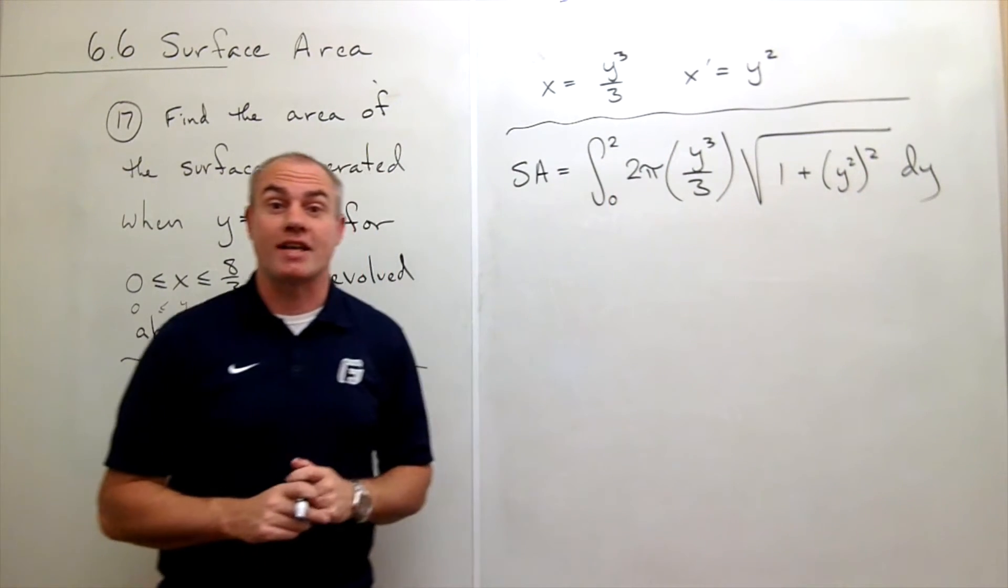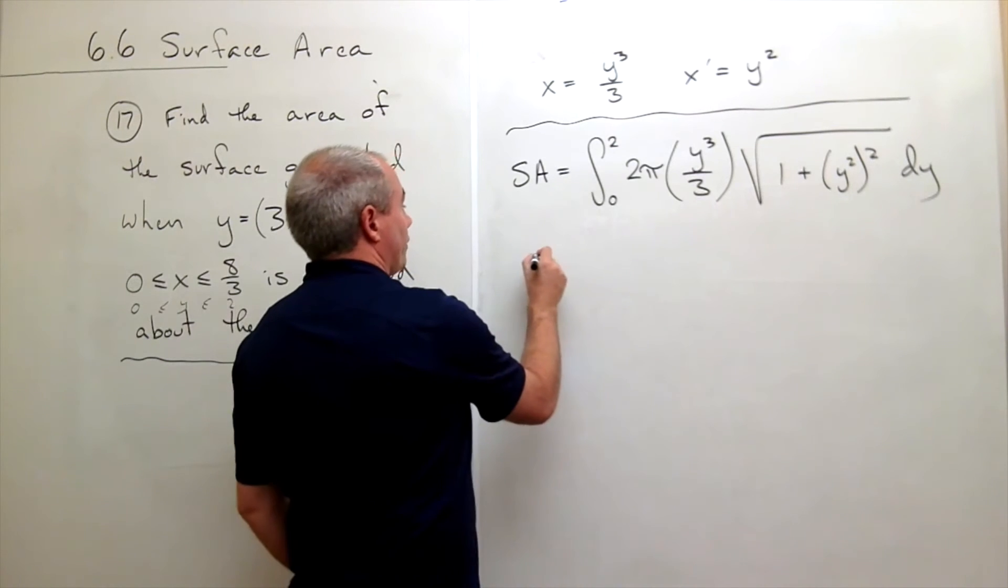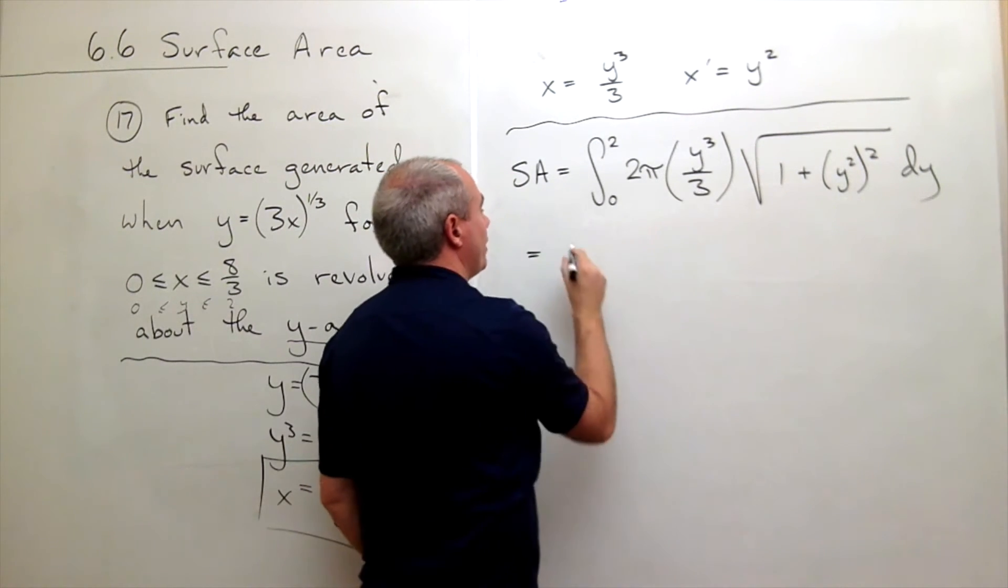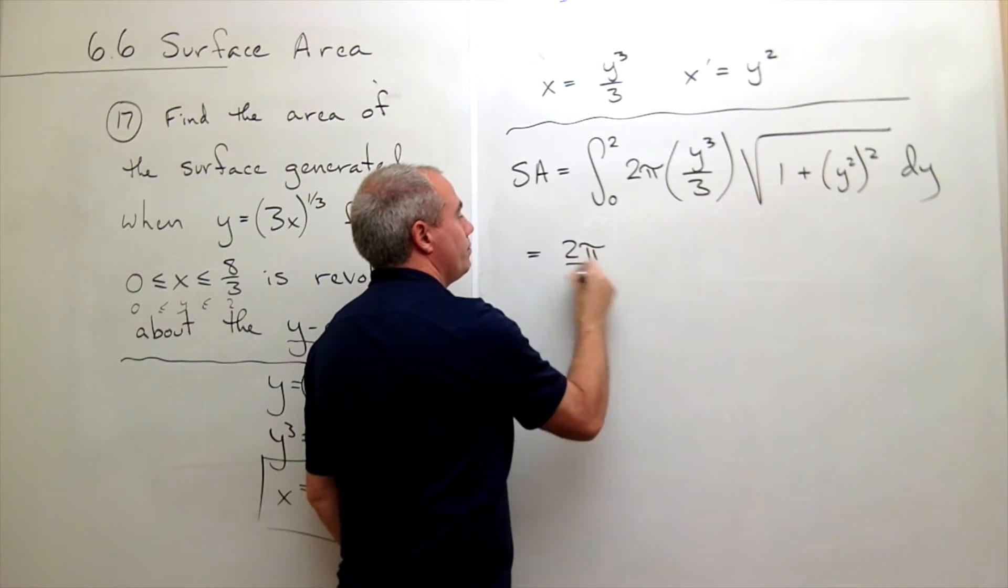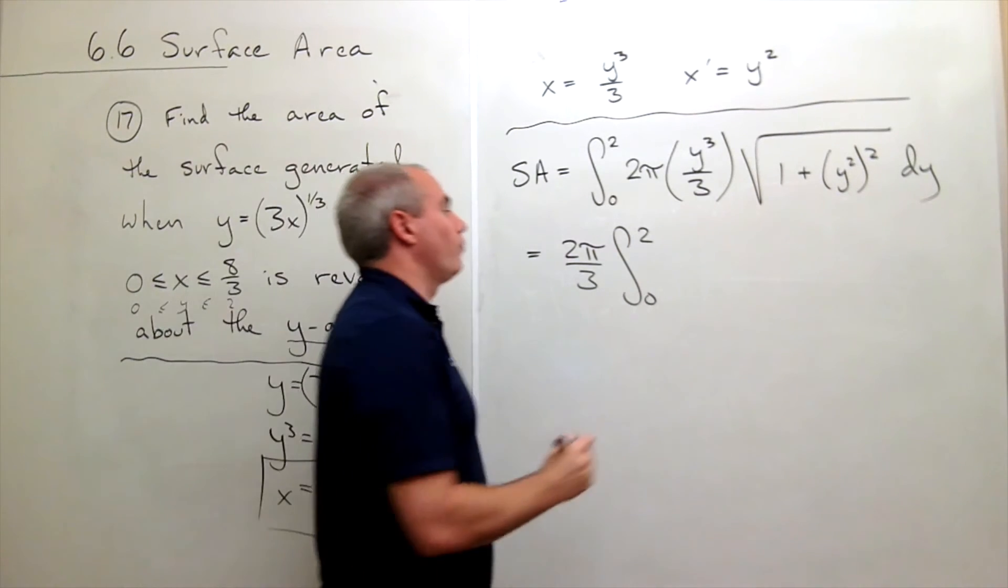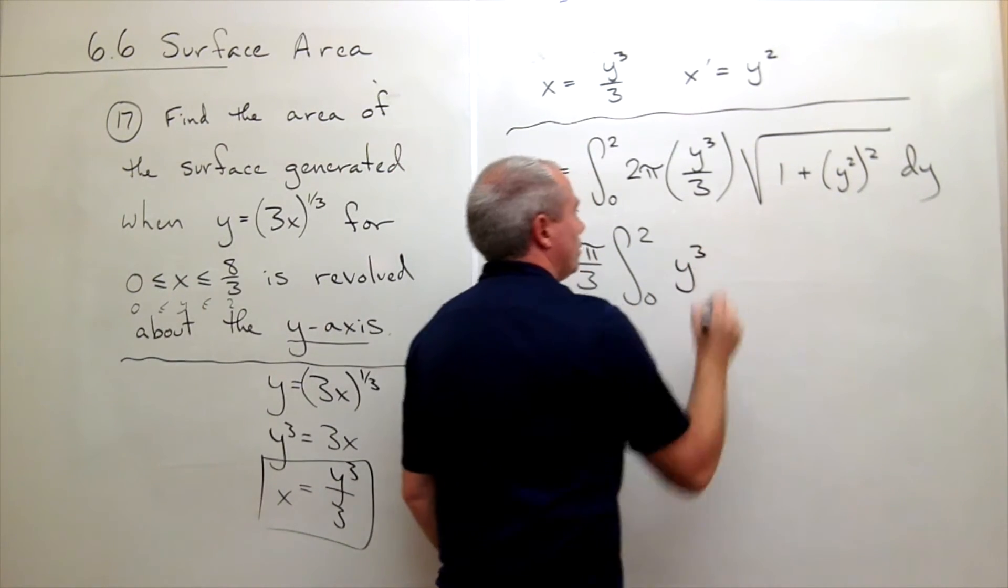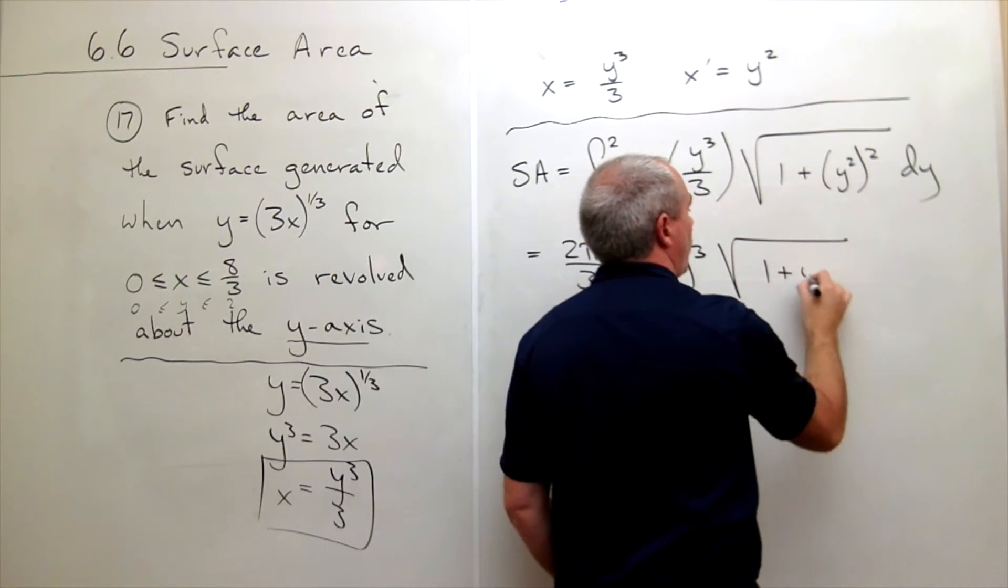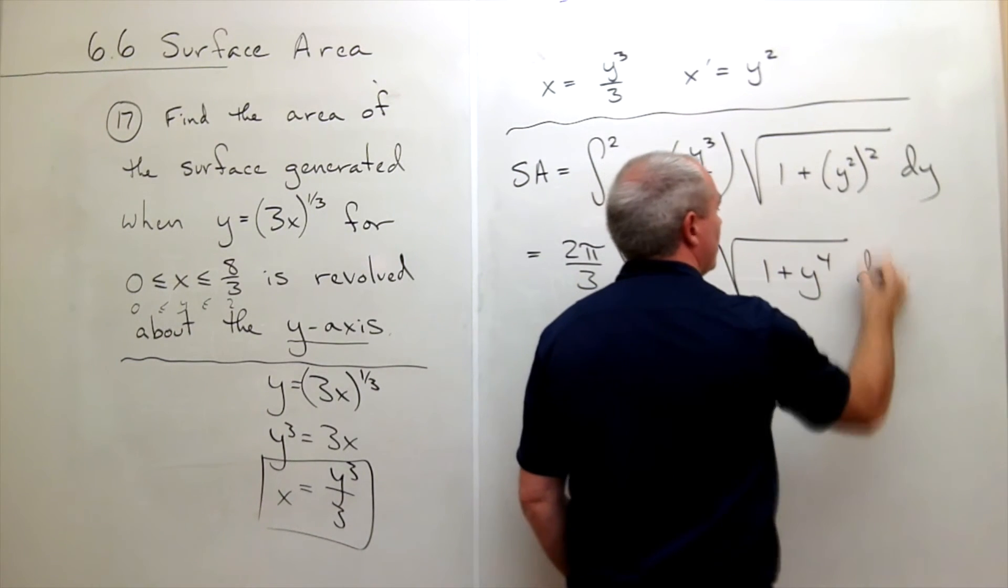Everything checks out, so let's keep going. I can rewrite this. Right off the bat I have a 2π and a 3 on the bottom, so I can pull out a 2π over 3 as a constant, integral from 0 to 2 of y cubed times the square root of 1 plus y to the 4th dy.